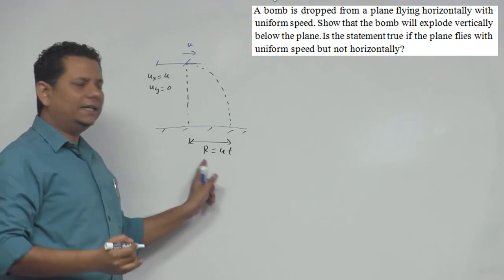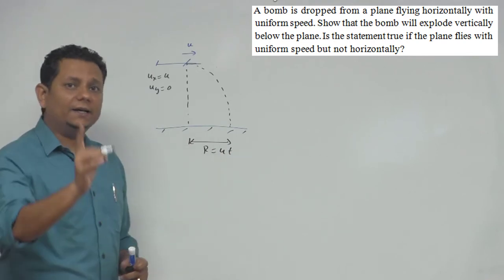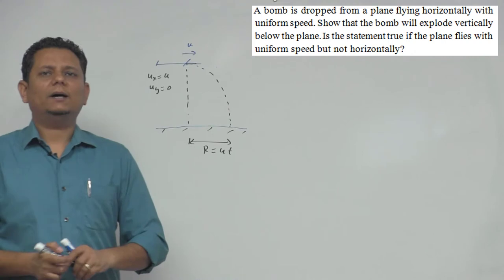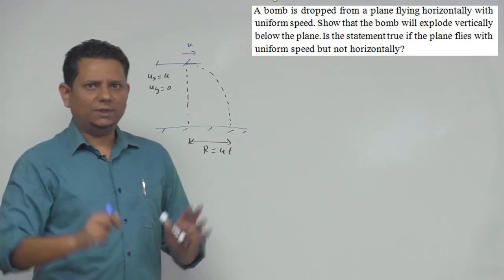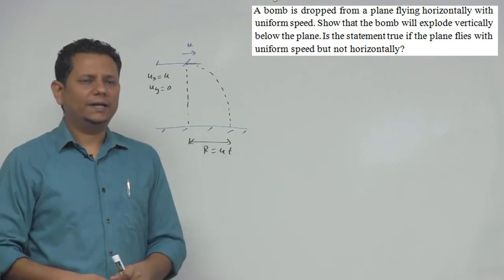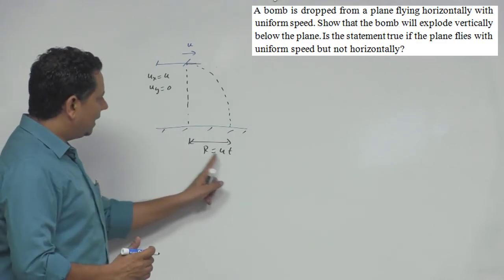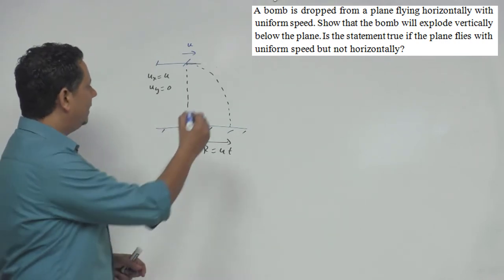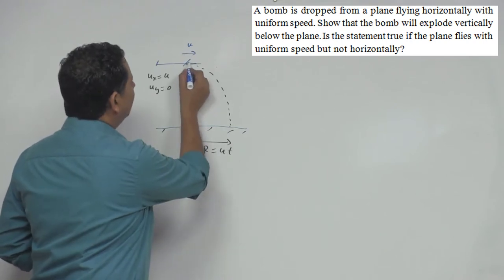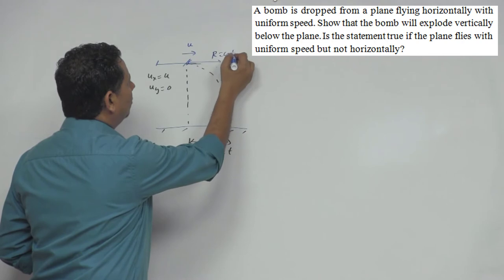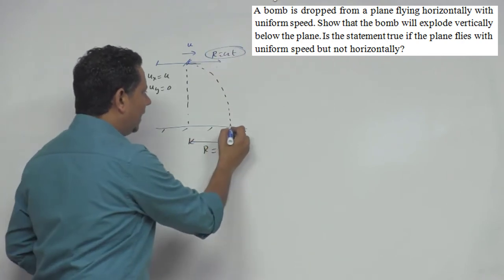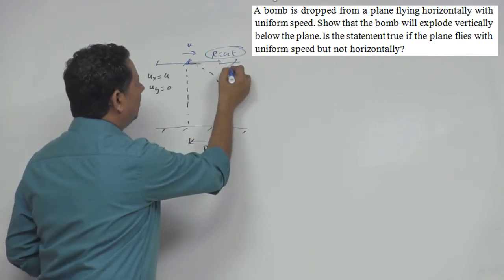The range it traveled, we call it range, which equals ut. In time t, with this velocity, it traveled this distance. Again here we assume your air resistance is zero. If air resistance exists, things will change, but let's assume this is happening in vacuum. In that case, the particle traveled this distance from here to here. In the same time, the aeroplane will travel the exact same distance r equals ut.